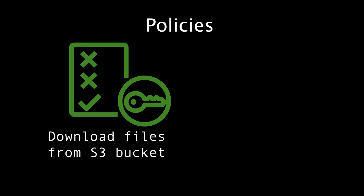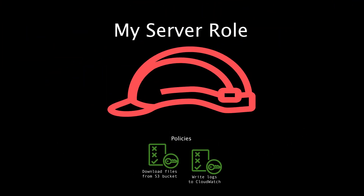Policies define which service can be accessed and the exact actions that we're allowing on that service. So we can create a policy that allows something to download files from a specific S3 bucket, or a policy that allows something to send logs to CloudWatch. Then we can create an IAM role and assign one or more policies to that role. A role is very similar to a user, but instead of creating a user that has a real person log in with a username and password, we can create a role and assign that directly to our EC2 instance.